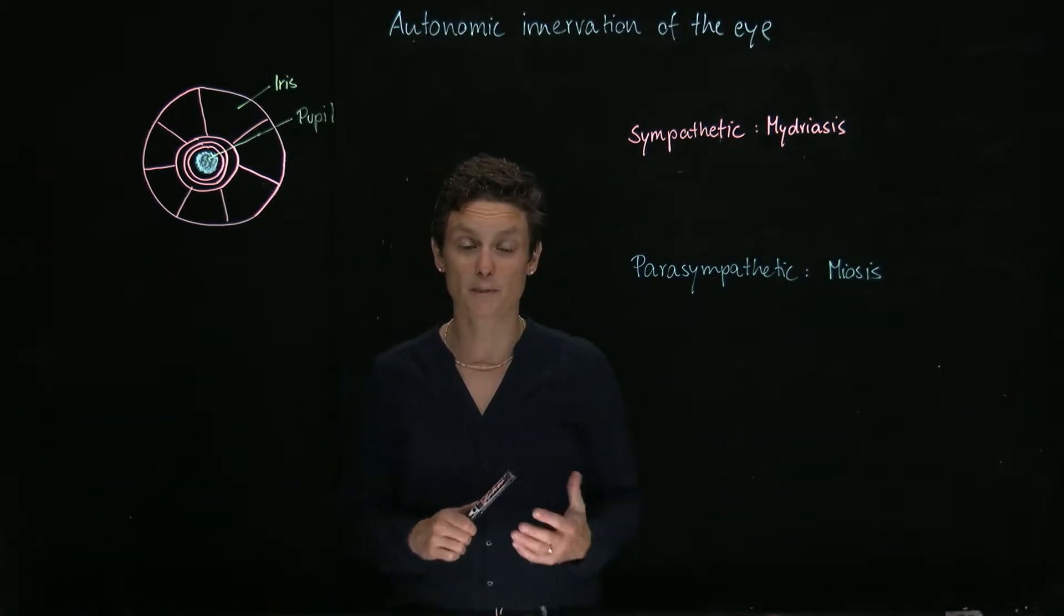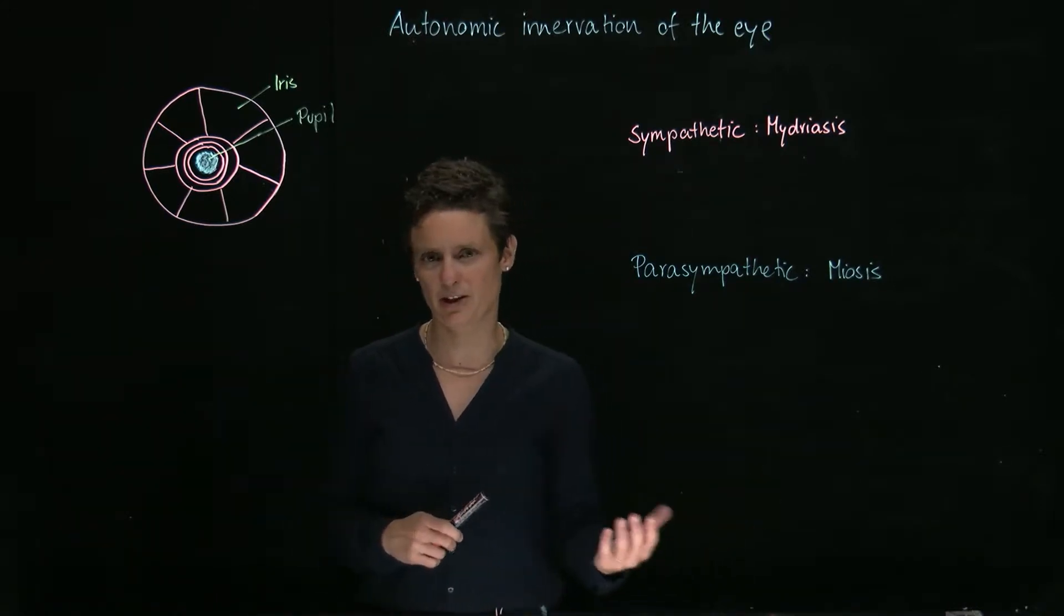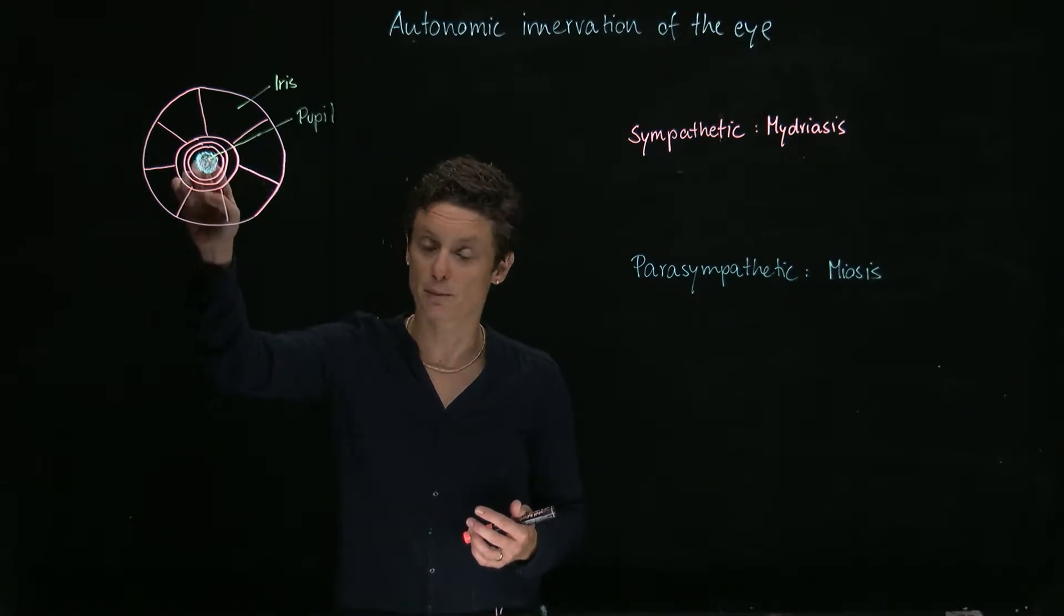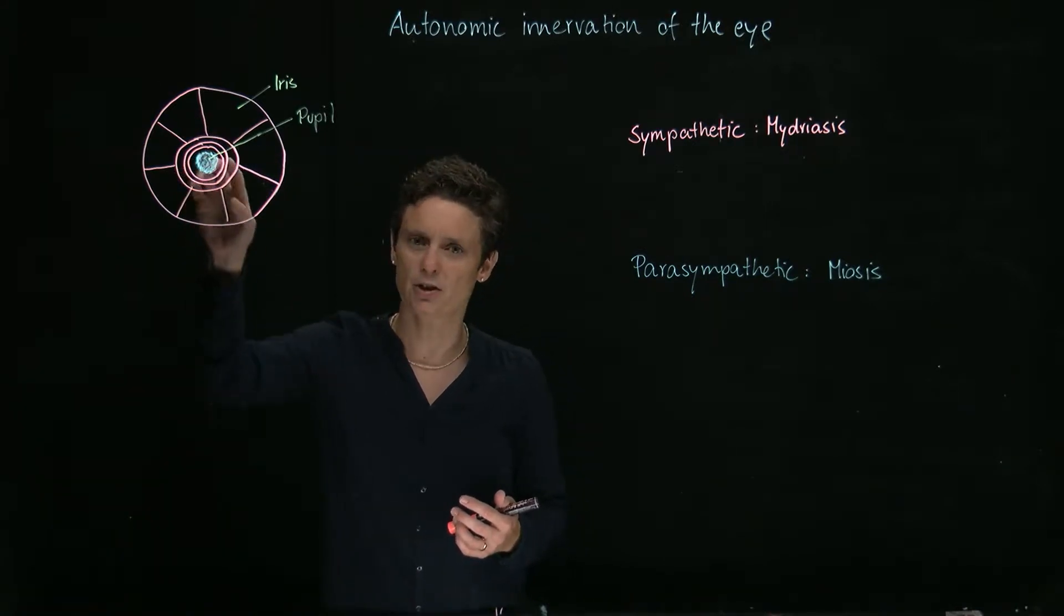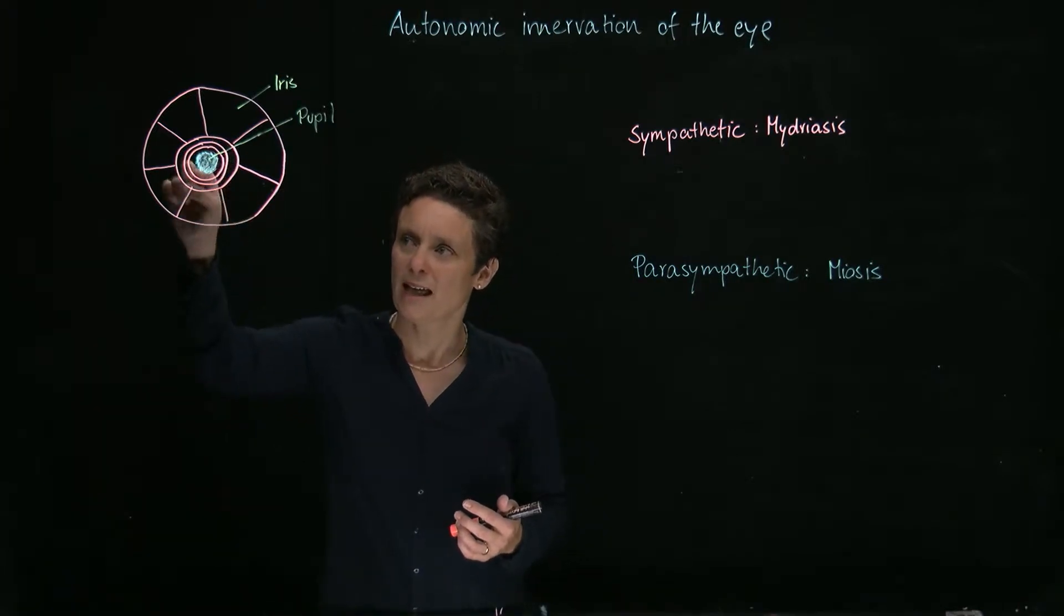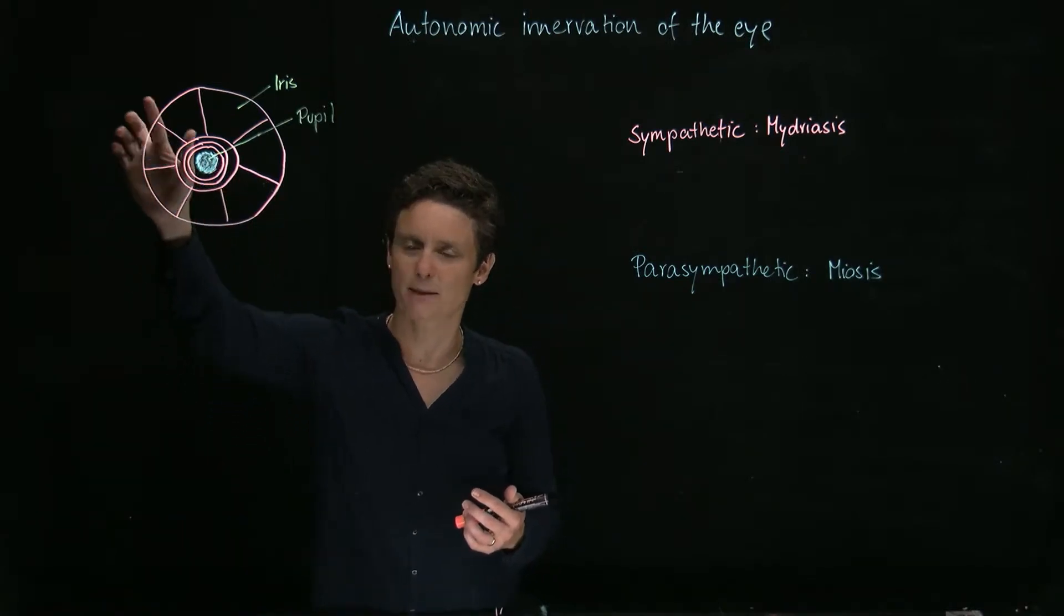Which smooth muscles are going to be responsible for mediating pupillary dilation? Let's look at our eye. This is the iris and here I have drawn the pupil. The pupil is surrounded by two different smooth muscles. There's one circular smooth muscle around it, and then we have the radial smooth muscle, which looks like spikes on a wheel.